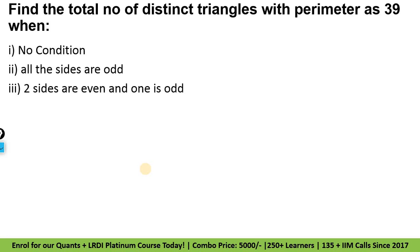Teesri condition: two sides even and one side is odd. So teen conditions hain. Ab dekh lete hain. So kisi bhi triangle ke liye property hoti hai jo bahut common hoti hai — triangle ki side ki property hoti hai: sum of any two sides should be greater than third side.